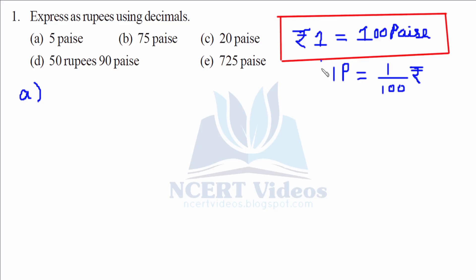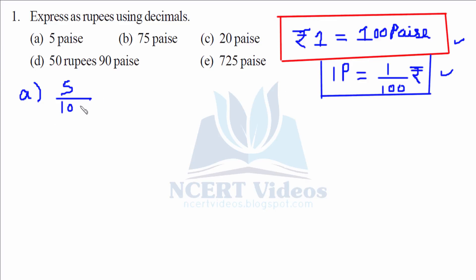Remember this conversion factor. So we'll try to do all of them. 5 paise would be how much rupees? 5 into 1 over 100, that could also be written as 5 over 100, which gives us rupees 0.05.